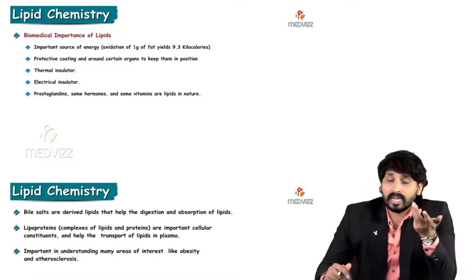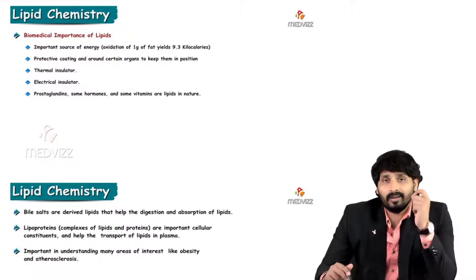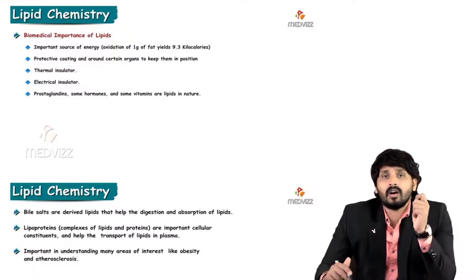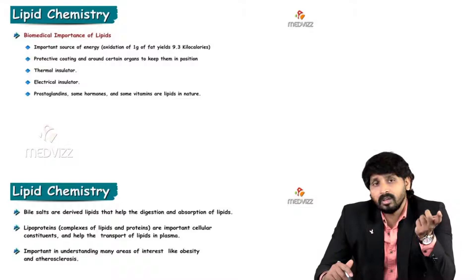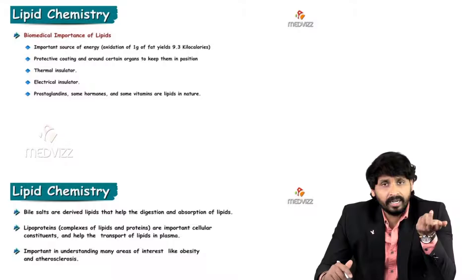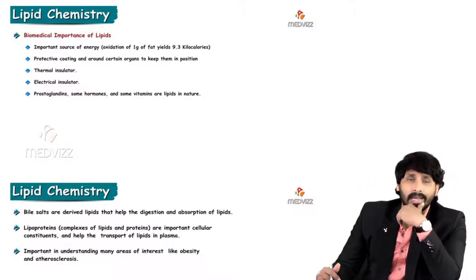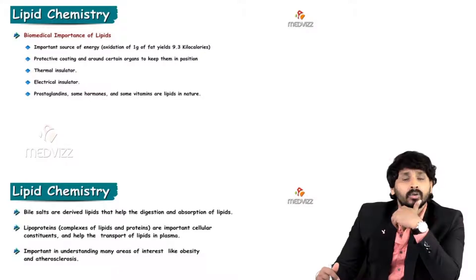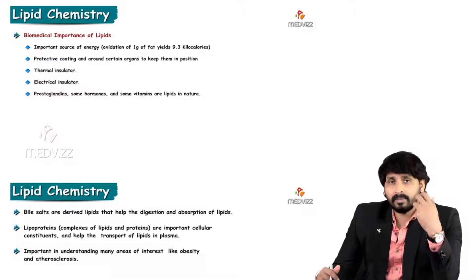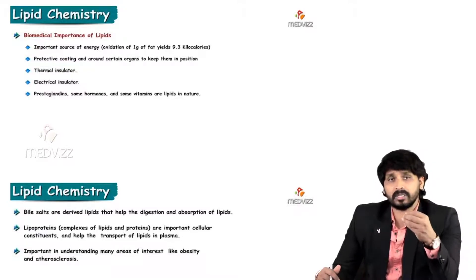Prostaglandins locate the area of disease or inflammation. Some hormones are lipid in nature, and some vitamins are lipid in nature. Bile salts like glycocholic acid and quinocholic acid are useful in the emulsification process, which aids digestion and absorption of lipids.